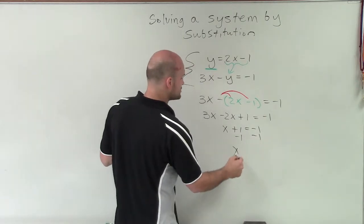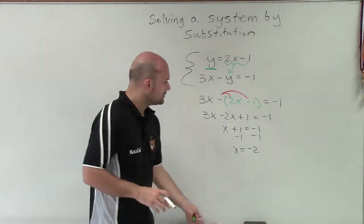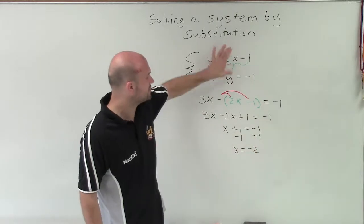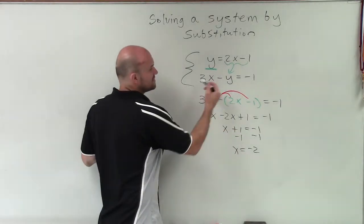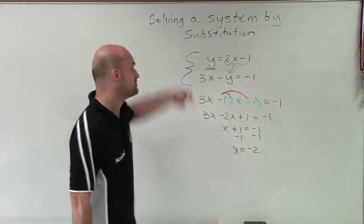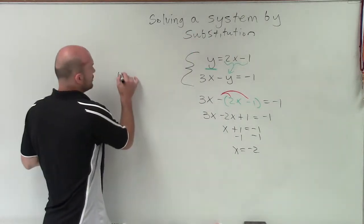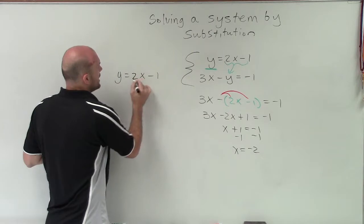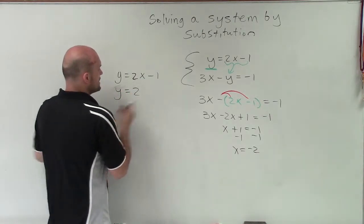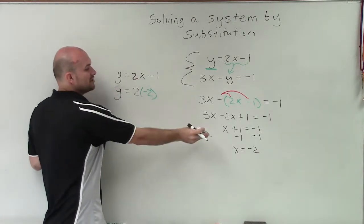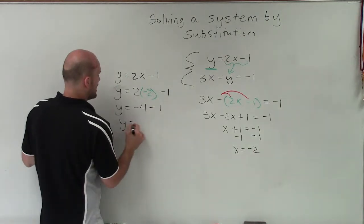Then I'll subtract 1 on both sides, so the value of x is equal to negative 2. That means x equals negative 2 is the solution for x — it's going to be true for both of these equations. But now I need to find the value of y. You can plug x in for either one of these equations and solve for y. But what's nice about substitution is we already have a variable isolated. So I'll take y equals 2x minus 1 and plug in x equals negative 2: y equals 2 times negative 2, which gives y equals negative 4 minus 1, so y equals negative 5.